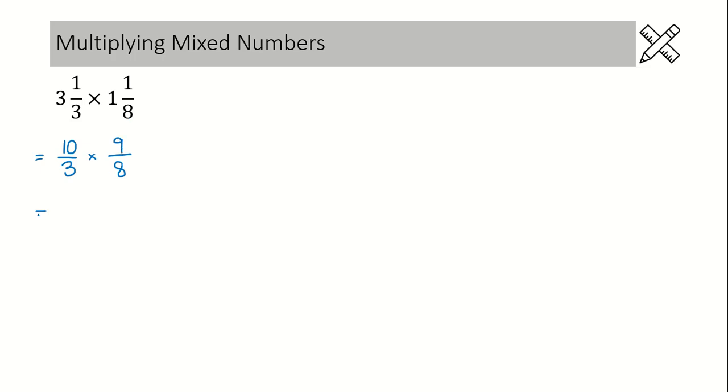So now we're multiplying simple fractions. Remember, before you multiply, can you cancel any common factors? We have a 9 in the numerator and a 3 in the denominator. They can both be divided by 3.